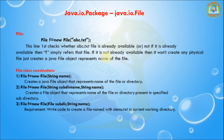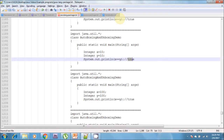Now I am going to discuss about the File class. File is a class. To create a File class object: File f = new File(name), where the argument is a String — the name of the file. This line first checks whether abc.txt is already available or not. If it is already available, it simply refers to that file. If it is not already available, it won't create any physical file — it just creates a File object representing the name of the file.